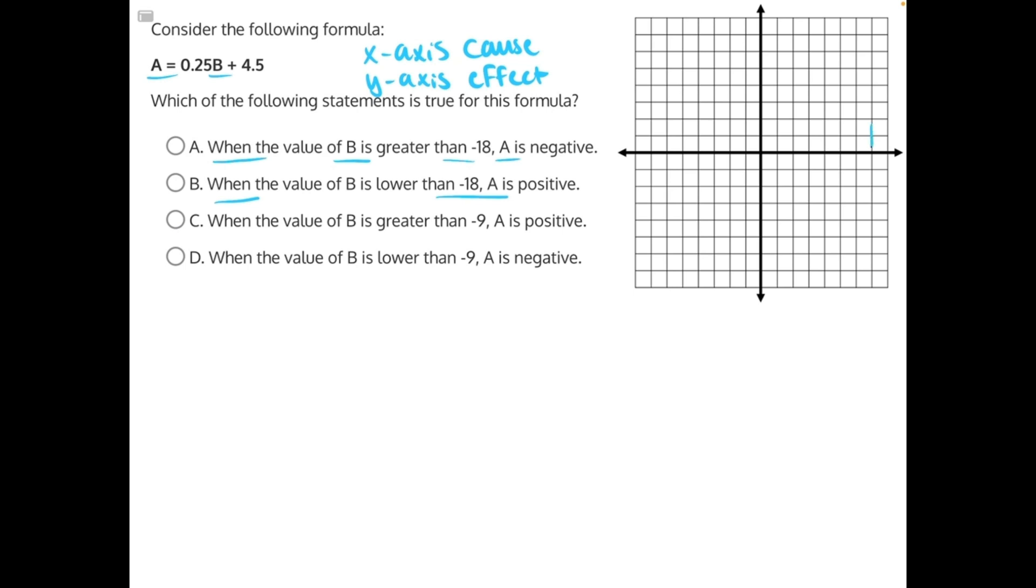So in this case, B is our cause variable, which makes it our x-axis, and A is our effect variable, which makes it our y-axis.